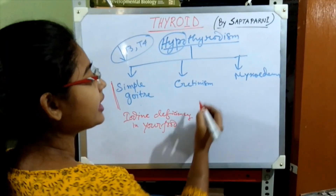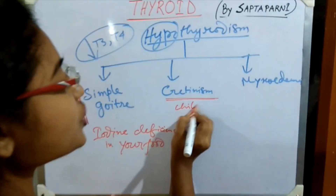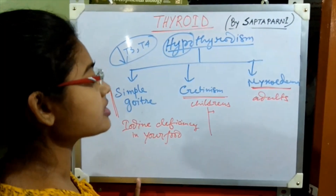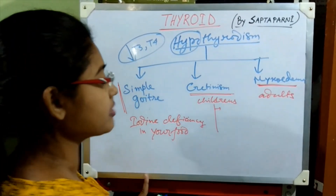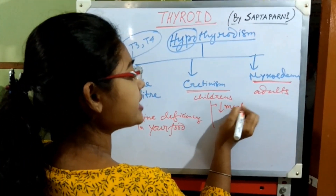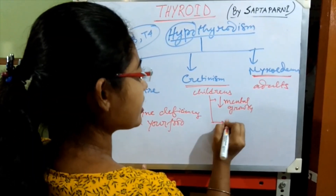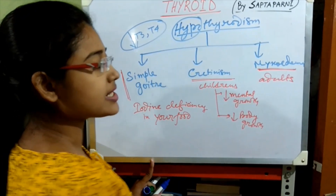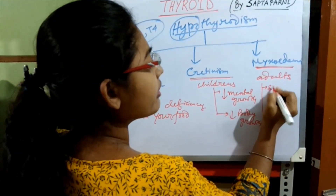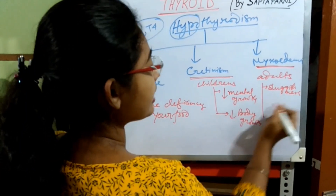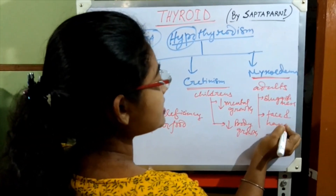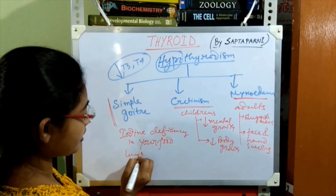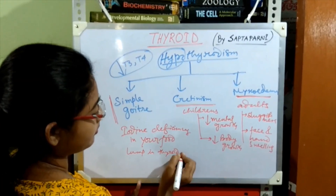Coming to the second disease — cretinism. This occurs mainly in children, whereas myxedema occurs in adults. In children, hypothyroidism causes cretinism, which has two main symptoms: decreased mental growth and decreased growth of body. In case of myxedema in adults, there is very much sluggishness, and the face and hands of the person get swollen.